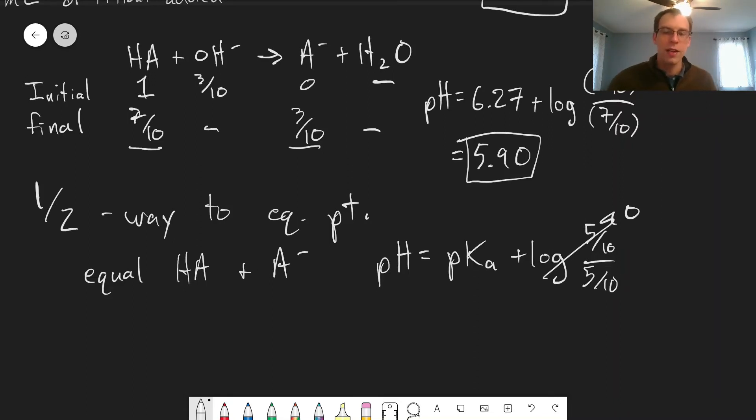And this gives us a way to, if we're measuring the pH in the titration, we can actually find pKa values for acids and bases this way. So at that halfway to the equivalence point, we can use that fact that pH equals pKa to find pKa values.